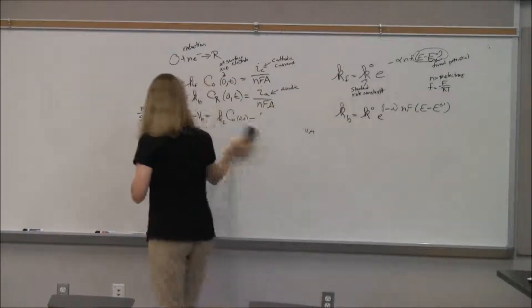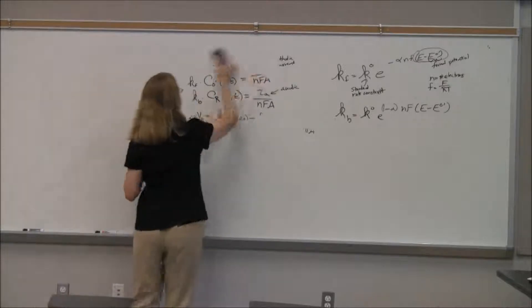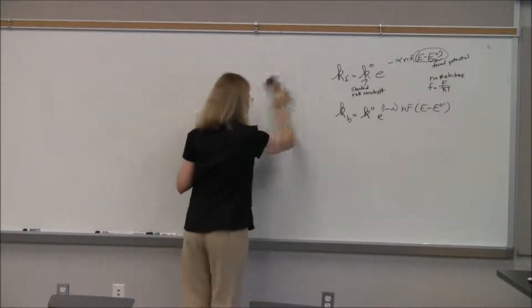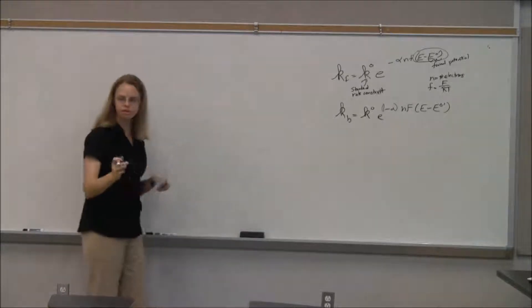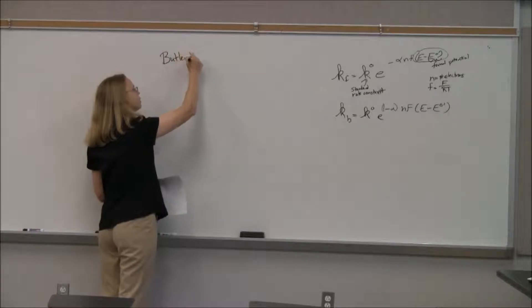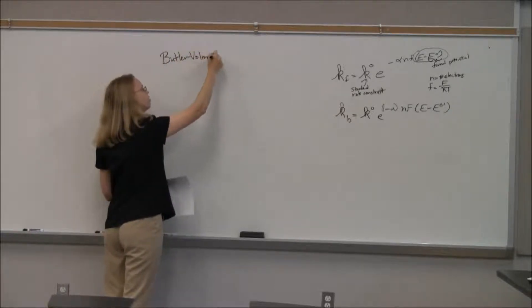So it turns out Kb is not that different. It's K0. In this case, it has a 1 minus alpha instead of a minus alpha, and f times e minus e0. That's the Kb term.